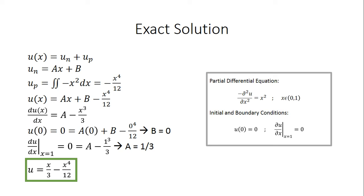We plug the homogeneous and particular solutions back into that first equation, giving us u of x equals ax plus b minus x to the fourth over 12. We don't know a or b, so we have two unknowns and therefore need two equations, which will be based on the initial and boundary conditions we were given.